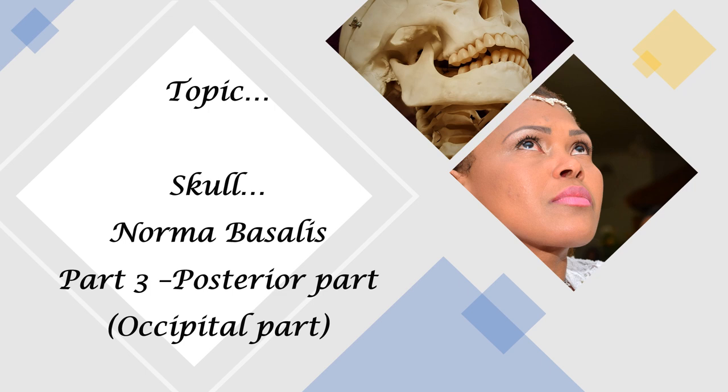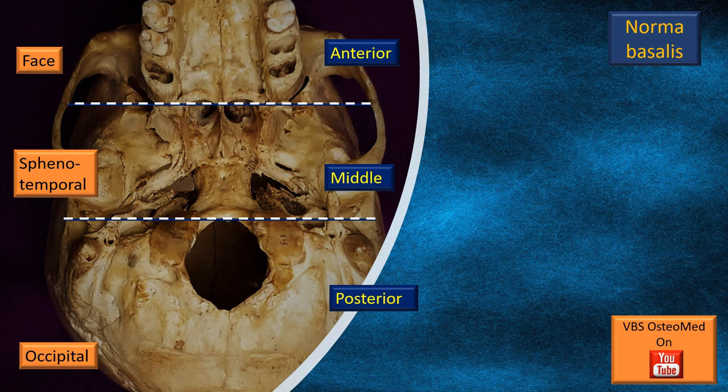Here we cover the posterior part, or the occipital part. This slide reconfirms the three areas of discussion. We have finished the first two and now we are left with the third part. Roughly, we divide the Norma Basalis into three areas: anterior, middle, and posterior — also called the face, sphenotemporal region, or the occipital region.